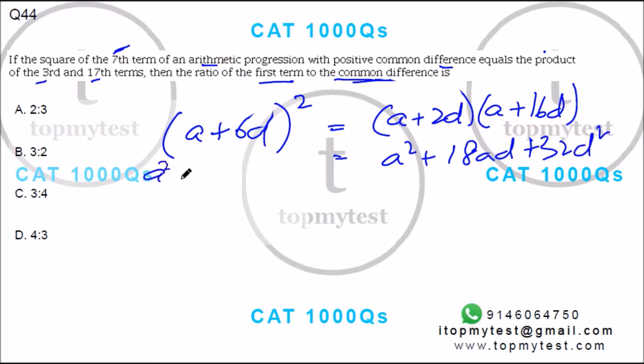The left-hand side gives us a² + 12ad + 36d². If I bring this over, you get 4d² equals 6ad. So d cancels out, and you get a